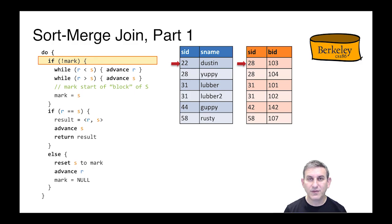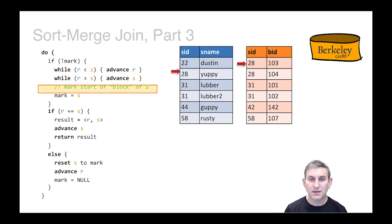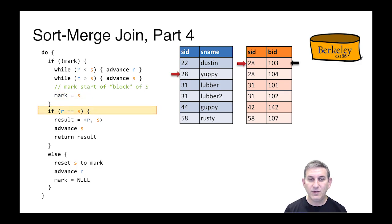We start by checking to see if there's a mark variable, which we'll define soon. Right now there isn't one. Because there's no mark variable, we're going to advance R until it's as big or bigger than S. And then we'll set a mark on the place where S is. So we'll see that mark up there in black.